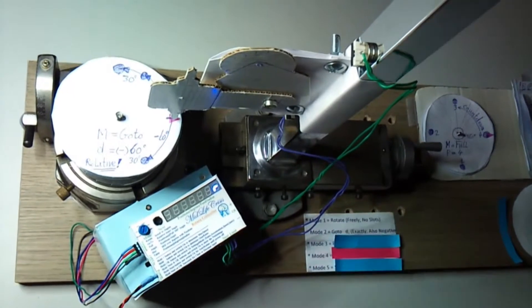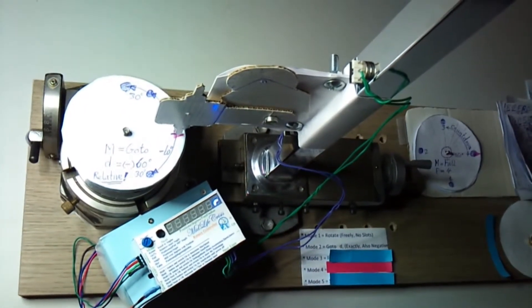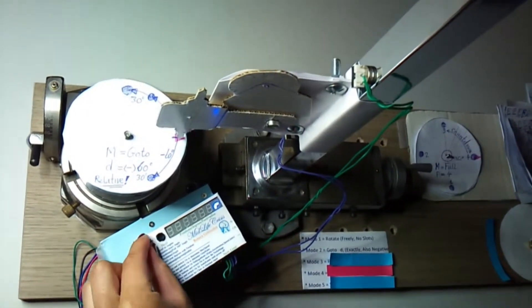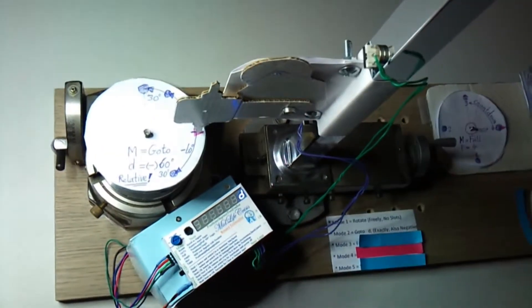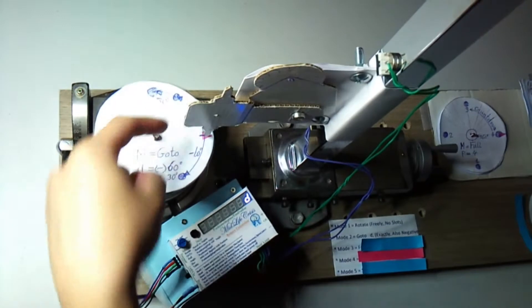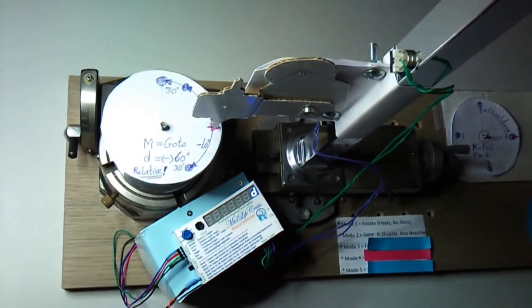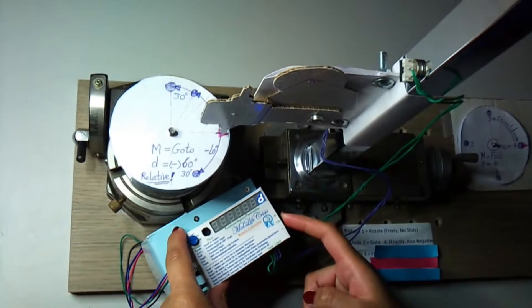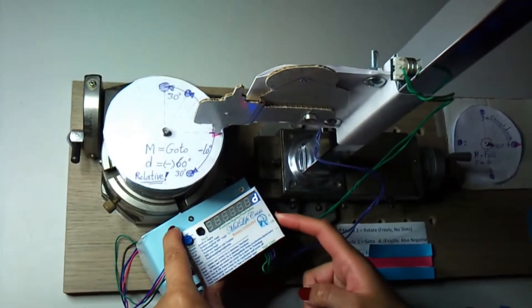Second mode is go to. We have to select the go to with a mode switch. We want to go to the reverse hole position at 60 degrees positive. We enter 60 degrees.